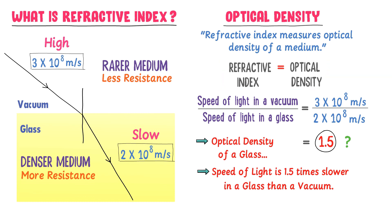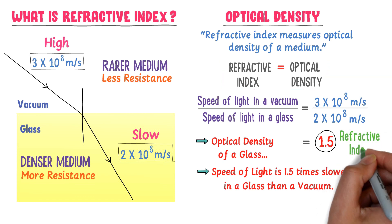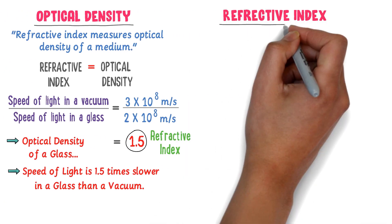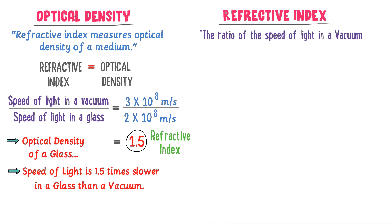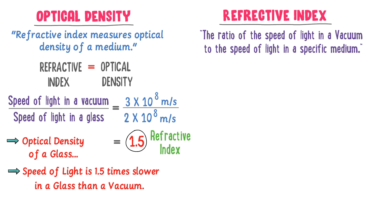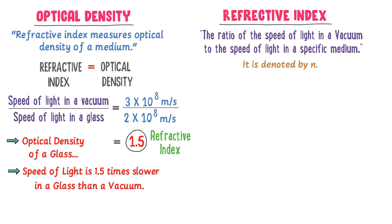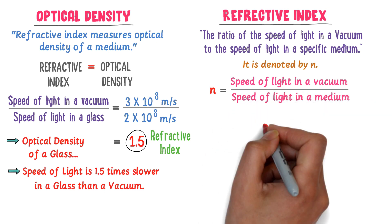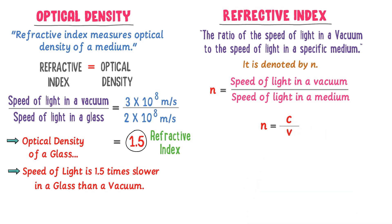So this 1.5 is also called the refractive index of glass. Therefore, we define refractive index as the ratio of the speed of light in a vacuum to the speed of light in a specific medium. It is denoted by n. Mathematically, refractive index n = c/v, where c is the speed of light in vacuum and v is the speed of light in the specific medium.